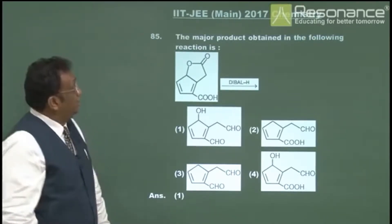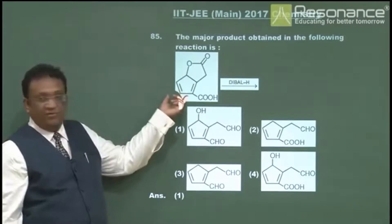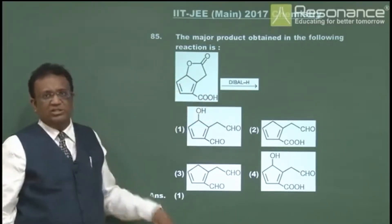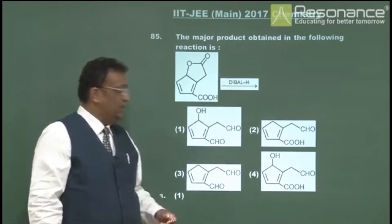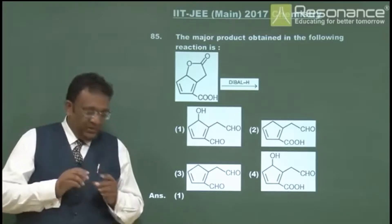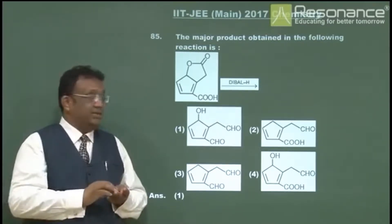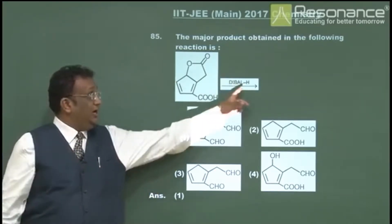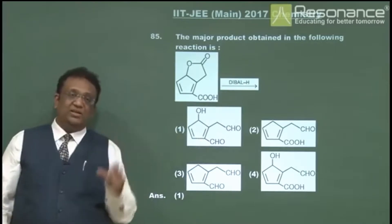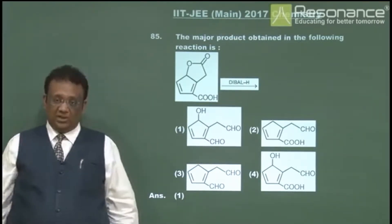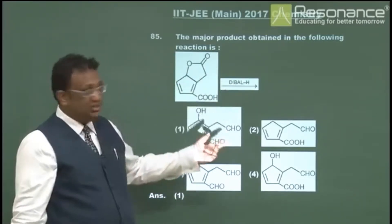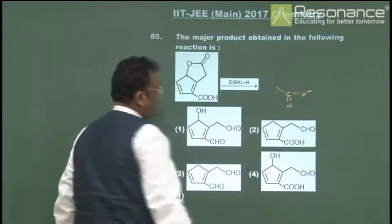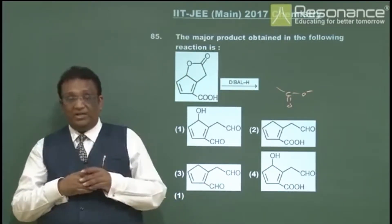A very interesting question: the major product obtained when a ring containing an ester and a carboxylic acid is treated with DIBAL-H. The alkene is inert towards DIBAL-H. When DIBAL-H is added, hydride ions first react with the acidic COOH, causing liberation of hydrogen gas. This destroys some DIBAL-H, and COOH gets converted to COO⁻.